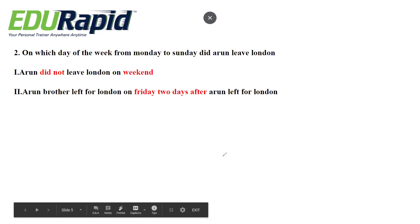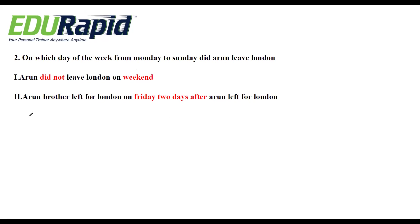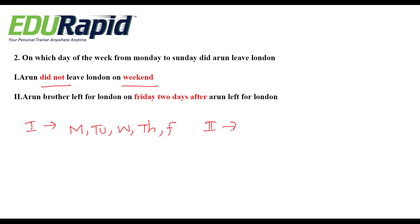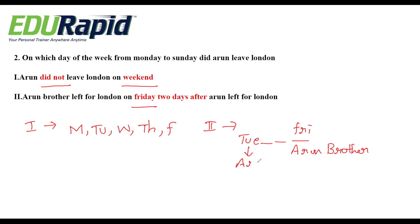Let me write it down. From statement 1, Arun did not leave on the weekend, so the chances are Monday, Tuesday, Wednesday, Thursday, and Friday. From statement 2, Arun's brother left for London on Friday, and 2 days after Arun left for London — that means Tuesday. Arun left for London on Tuesday.